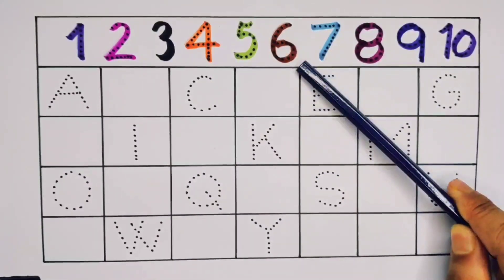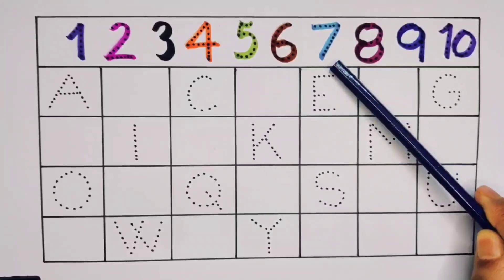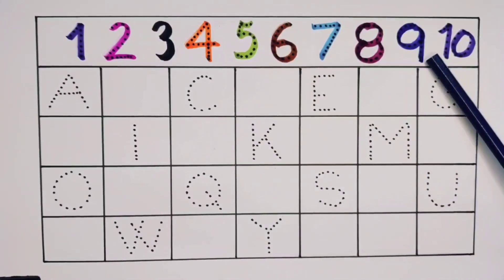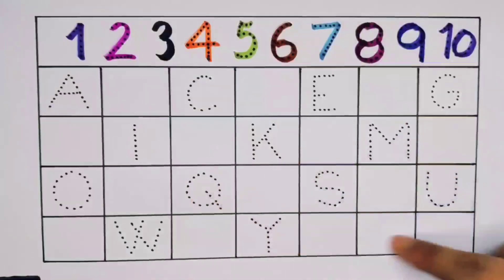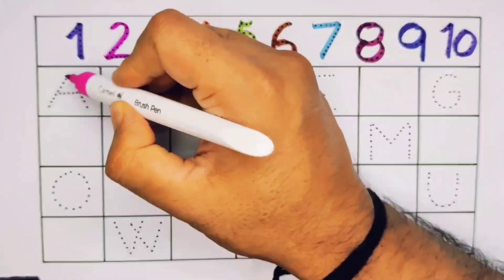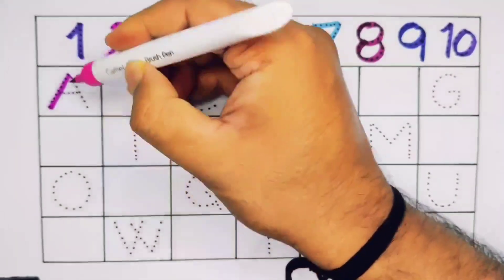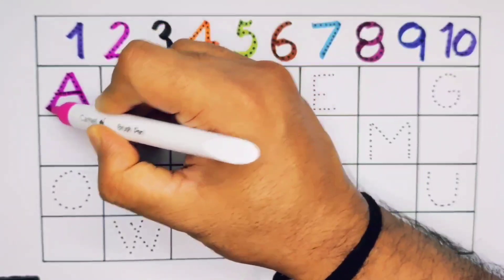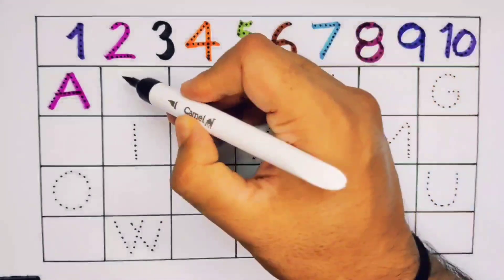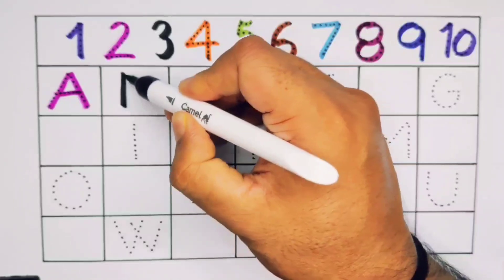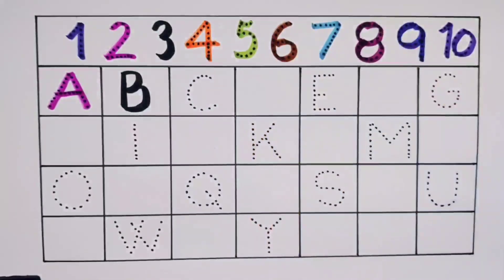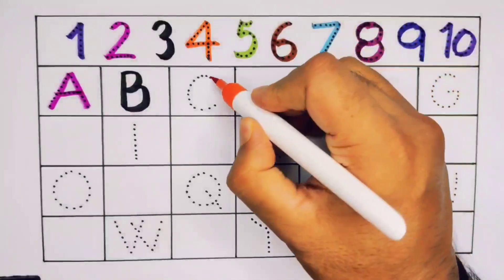Now let's learn the alphabet A to Z. A — A for aeroplane. What comes next, kids? It's B — B for bag. Next it's C — C for curve.